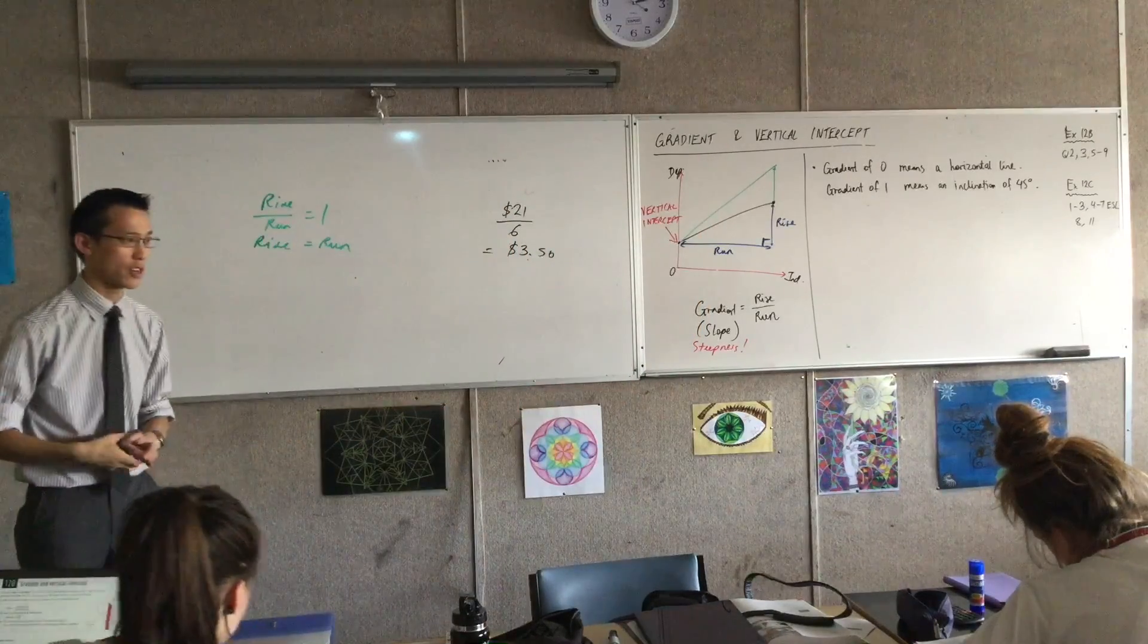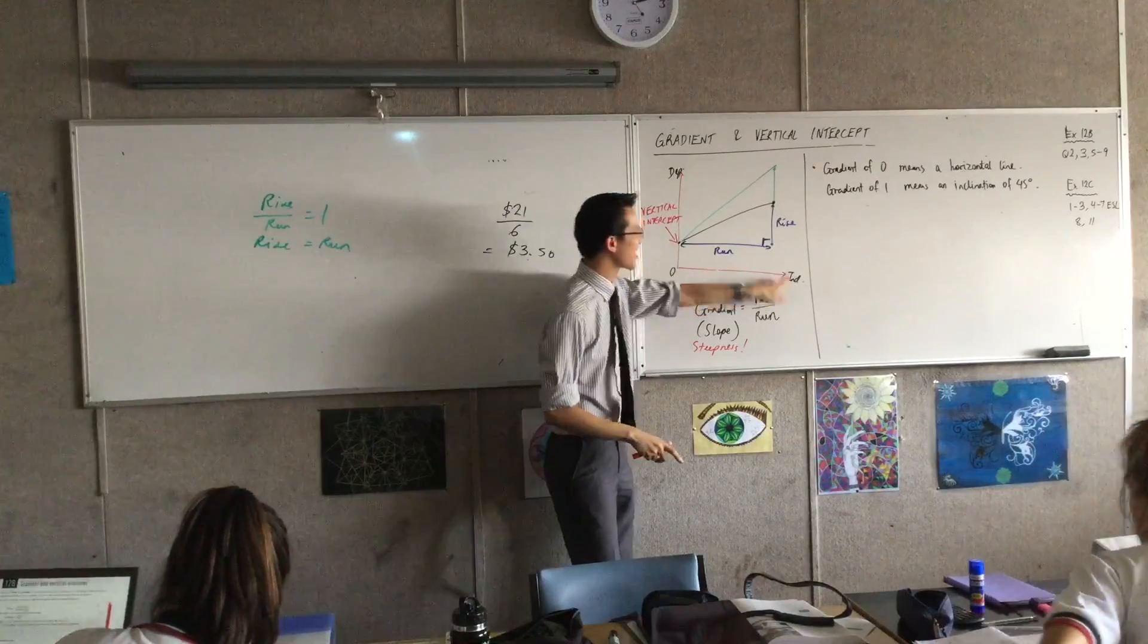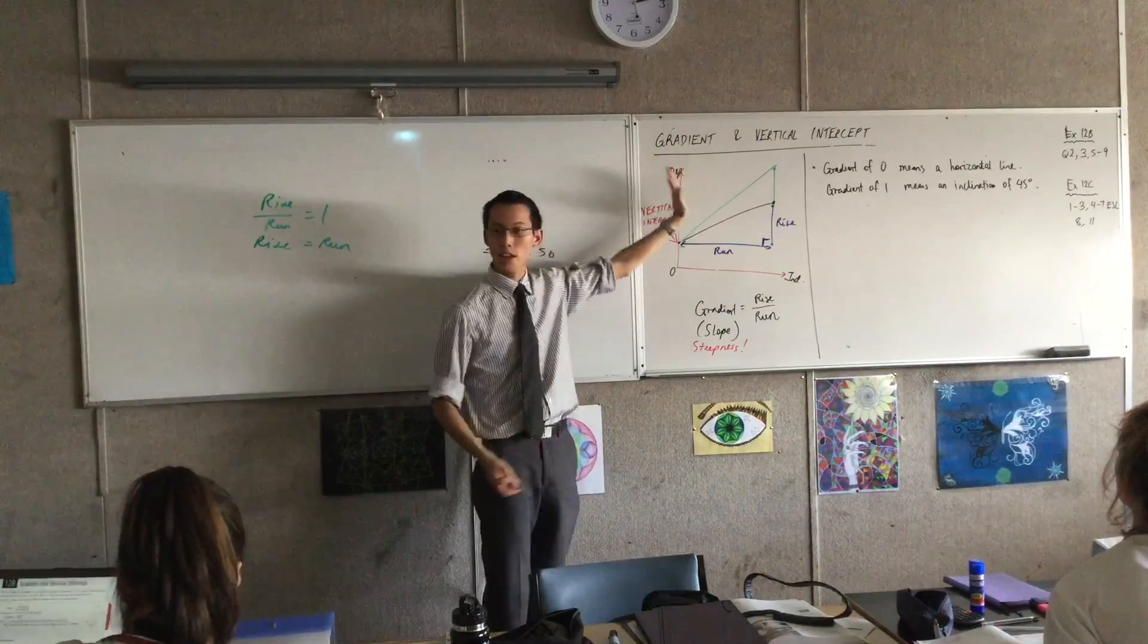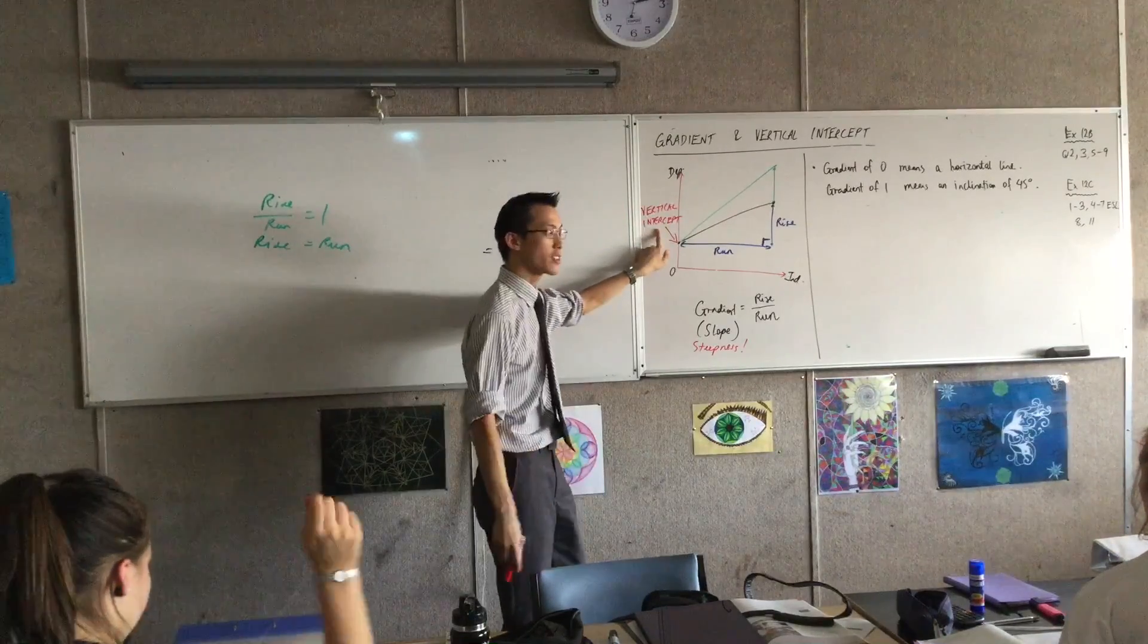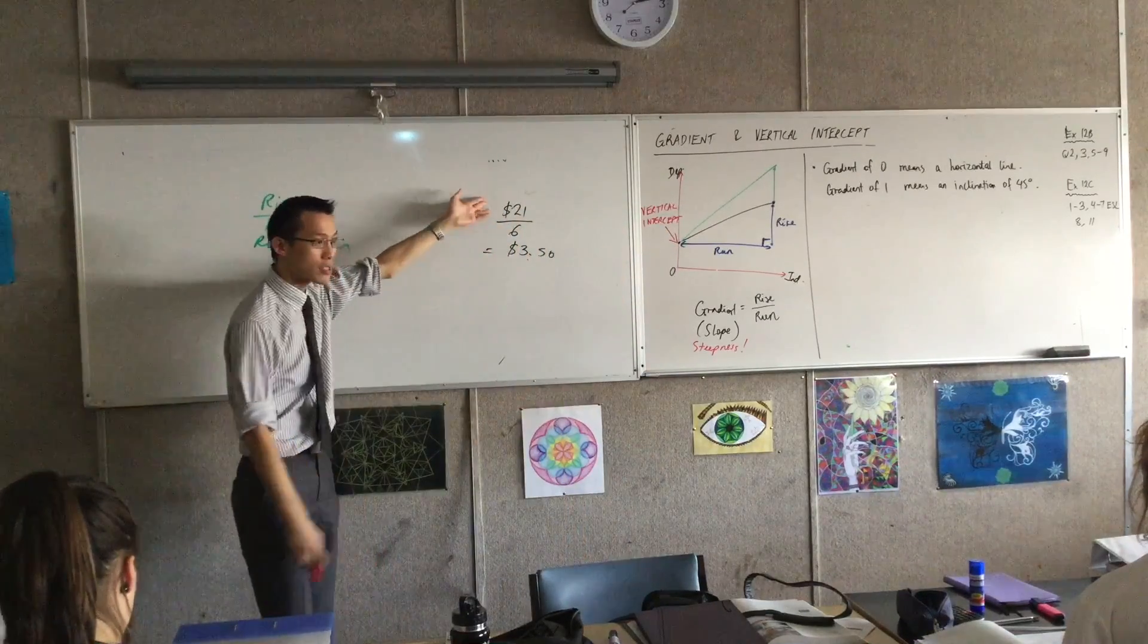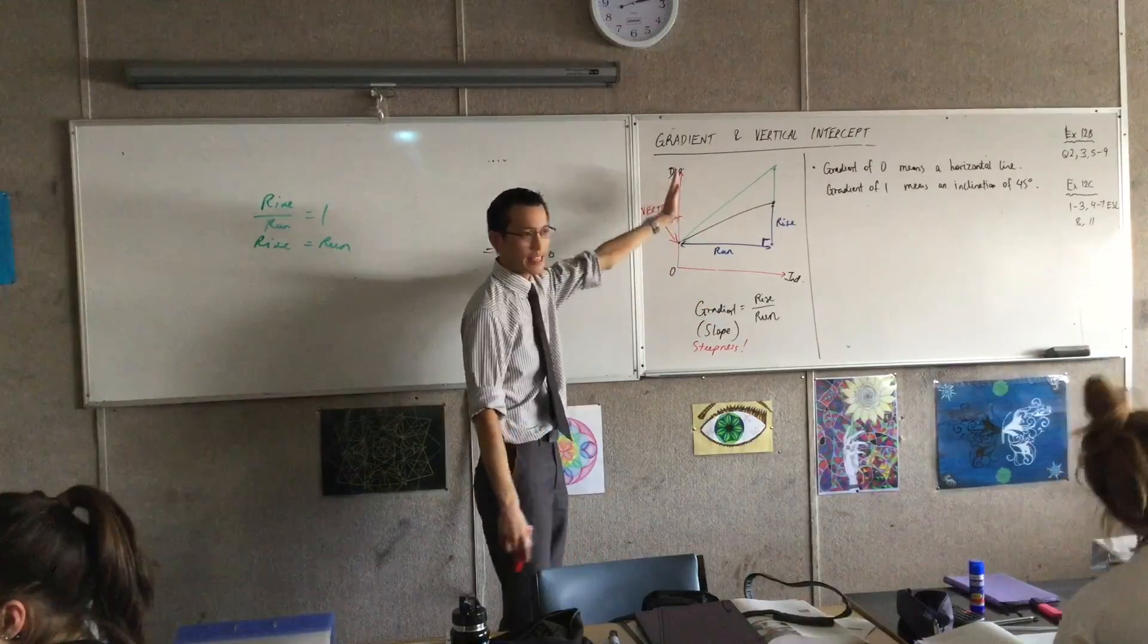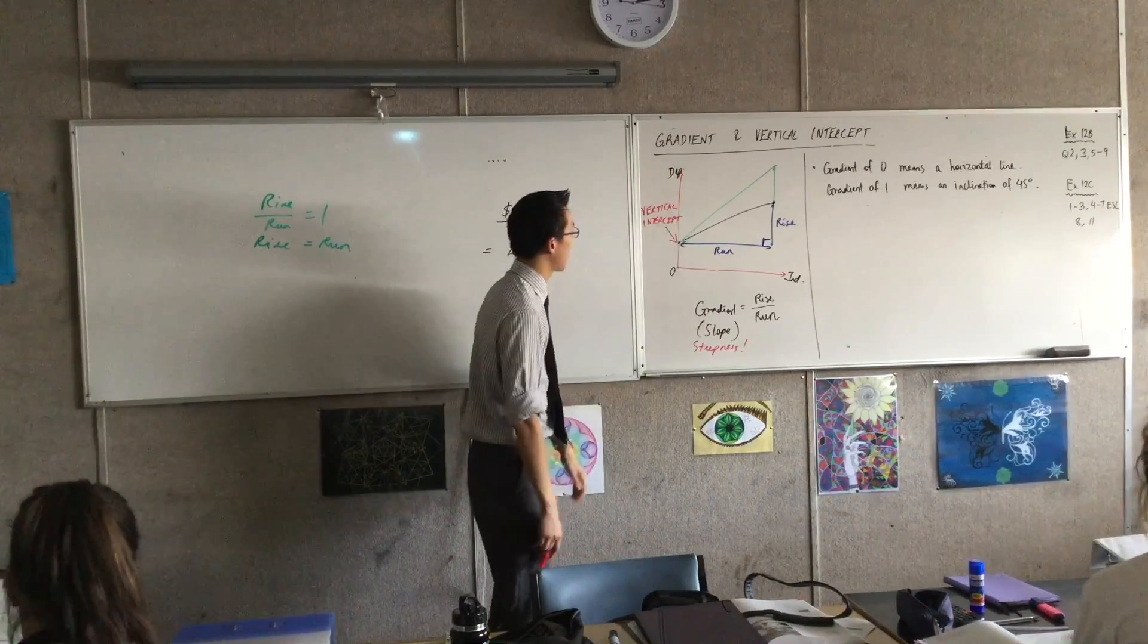Now, if you recall back to coordinate geometry last year, we used to call these x and y. We frequently call them x and y. Since the vertical one is so often called y, we often call this the y-intercept. I hope that phrase sort of rings a bit of a bell. It's not always y, though. It might be cost, it might be time, it might be kilometres, but the important thing is, it's the intercept on this dependent variable.